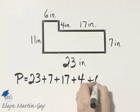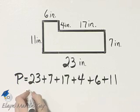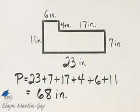plus 6, plus 11. If you find that sum, it is 68, so the perimeter is 68 inches.